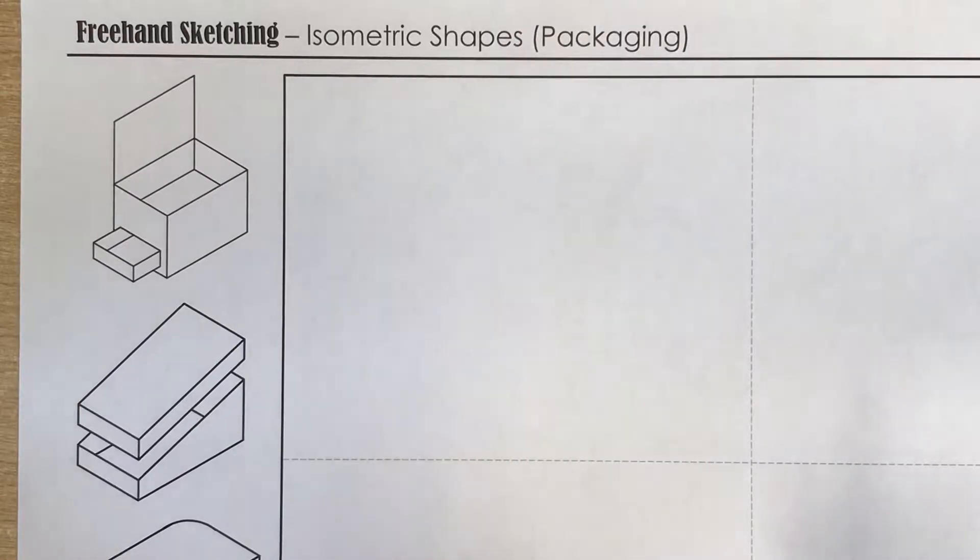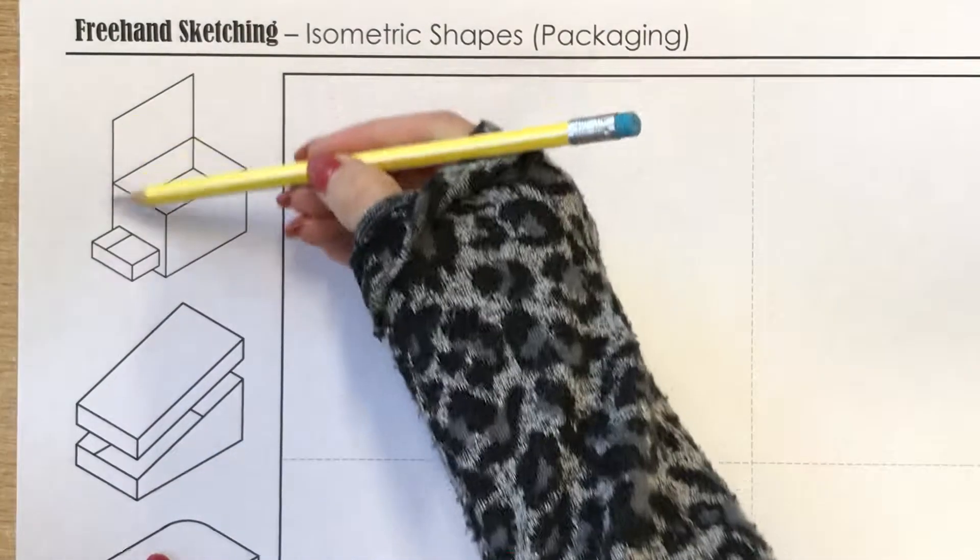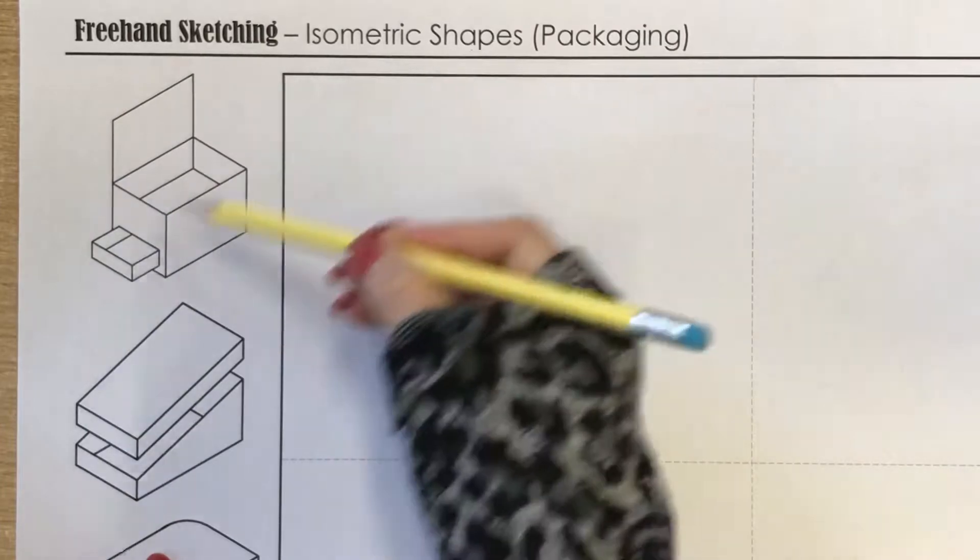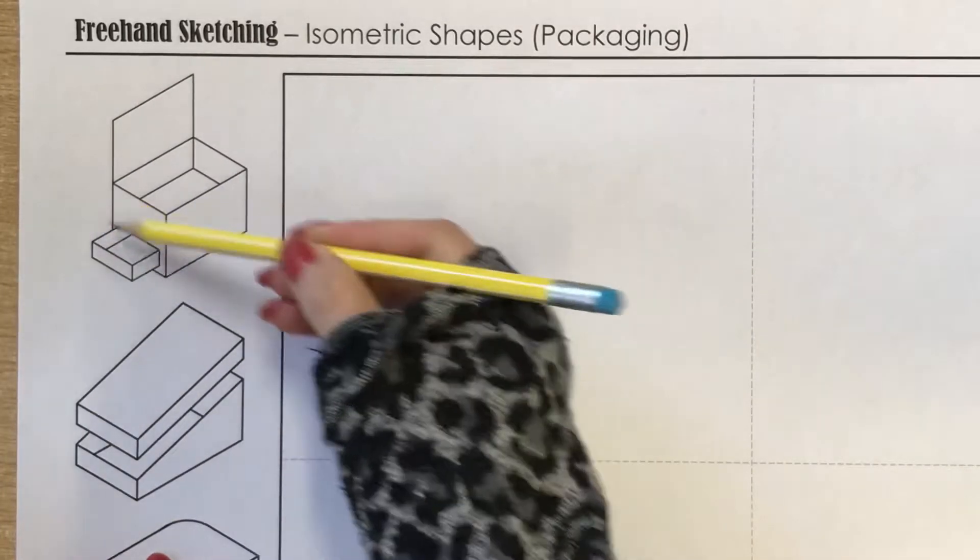We won't expect absolutely perfect 30-degree angles, but we do want to see that it looks like an isometric. The big problem with freehand is that people don't keep their lines parallel. Always make sure your vertical lines are all parallel, your lines going off at an angle to the top right are parallel, and the same to the left.